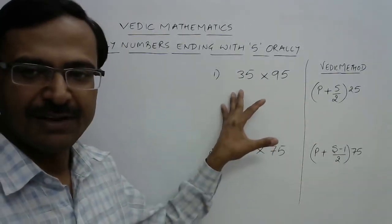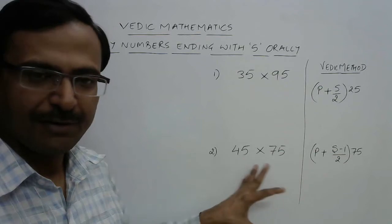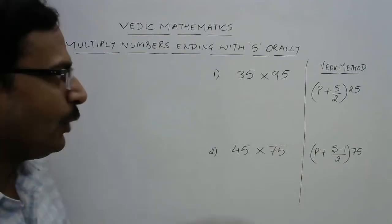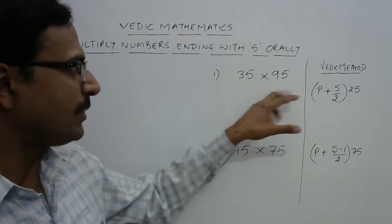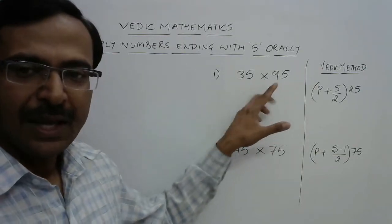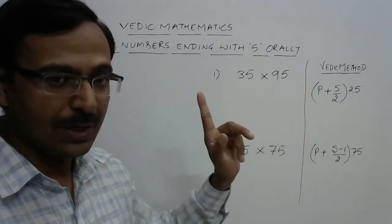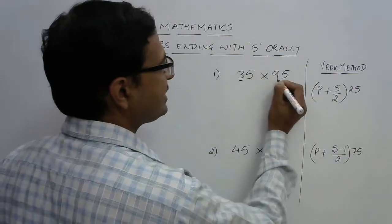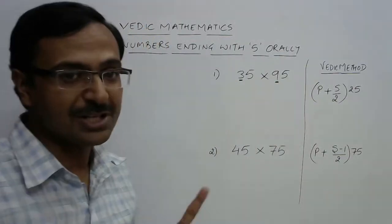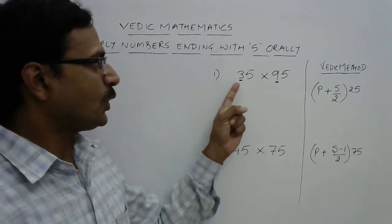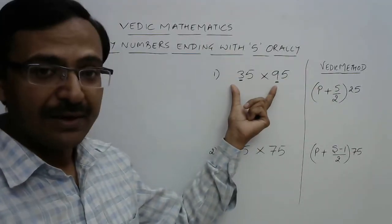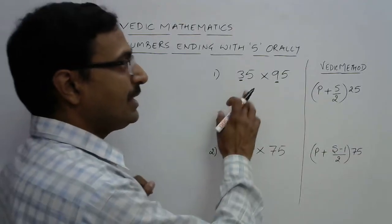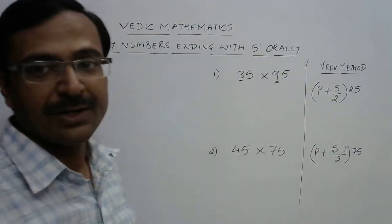Now these are two different examples. Why? Because if you leave 5 in both numbers, then we have 3 and 9, and 3 + 9 = 12, which is even. So whenever the sum of these numbers—it may be a three-digit number also, mind you—so apart from 5s, if you add the other digits and it comes out to be even, then you have to use a different method.